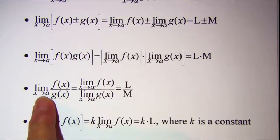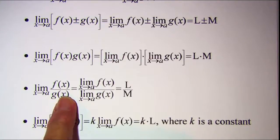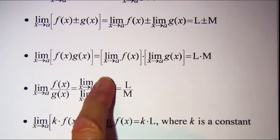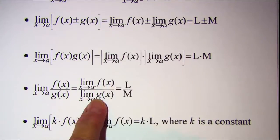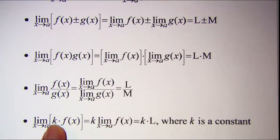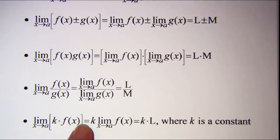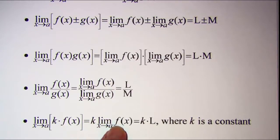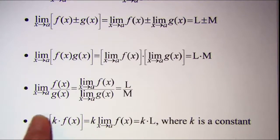The third theorem states that the limit of a quotient is the quotient of the individual limits. And the fourth theorem states that the limit of some scalar k times a function is the same as that scalar k times the limit — so we can take this constant out in front of the limit.